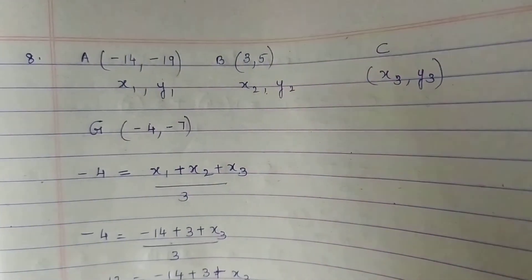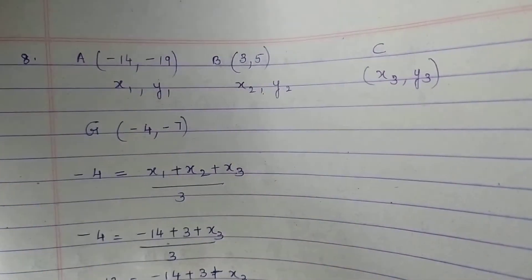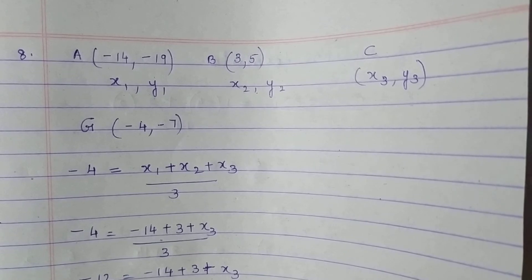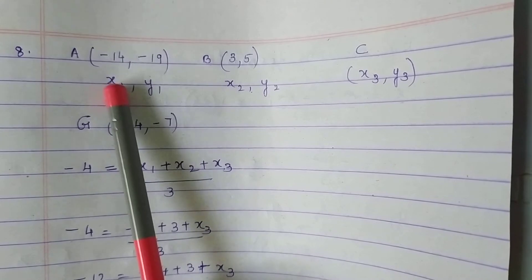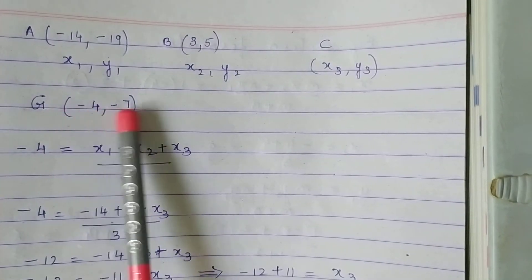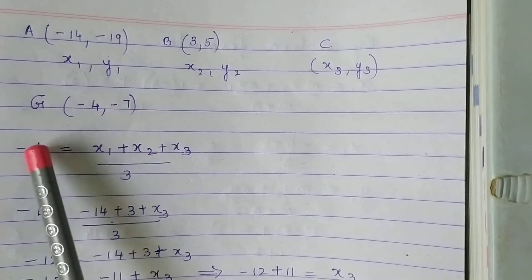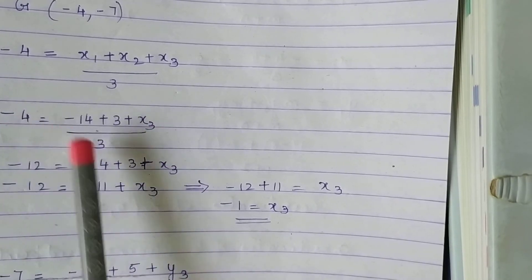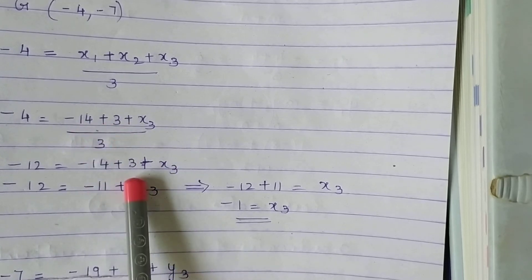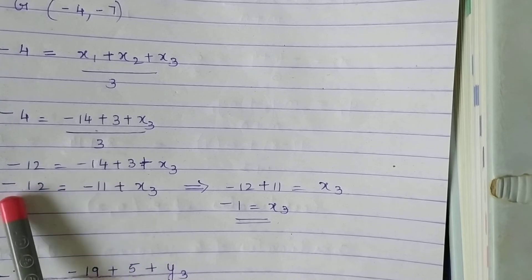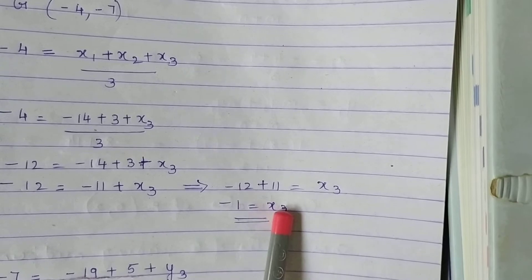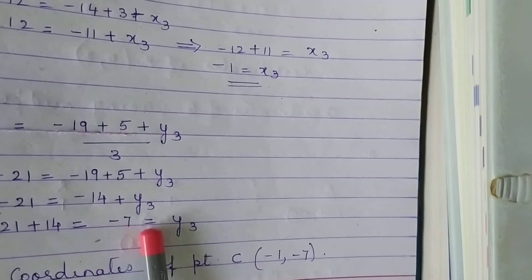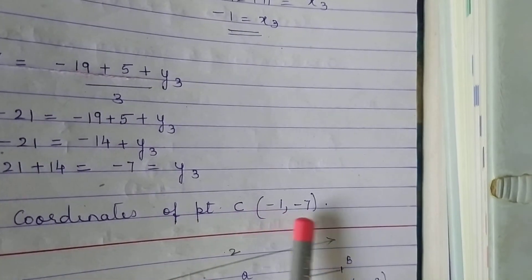We go to question number 8. In triangle ABC, G(-4, -7) is the centroid. If A(-14, -19) and B(3, 5), find the coordinates of C. You have coordinates of A and B and the centroid. Use the formula: minus 4 equals (X1 plus X2 plus X3) by 3. Cross multiply: minus 12 equals minus 14 plus 3 plus X3. Solving: minus 12 equals minus 11 plus X3, so X3 equals minus 1. Same method for Y gives Y3 as minus 7. Therefore coordinates of point C are (-1, -7).